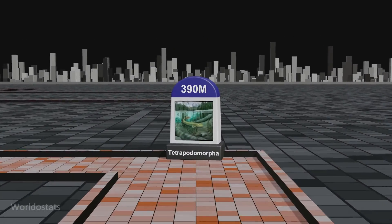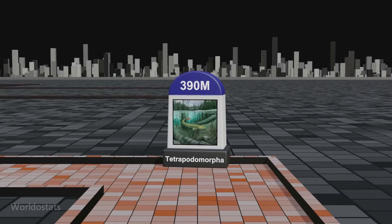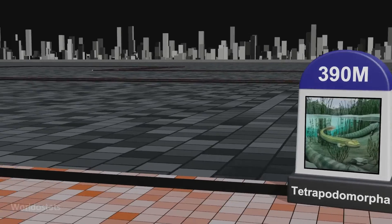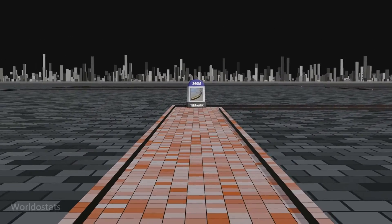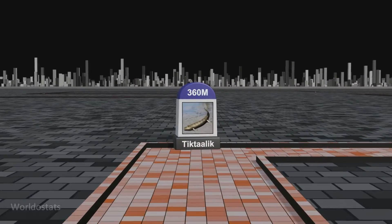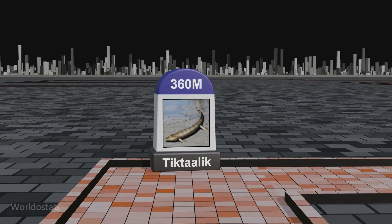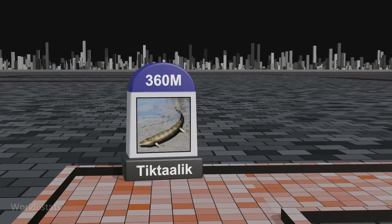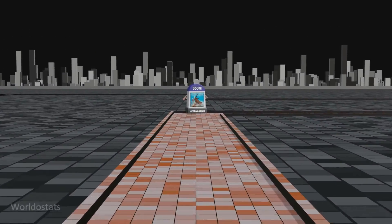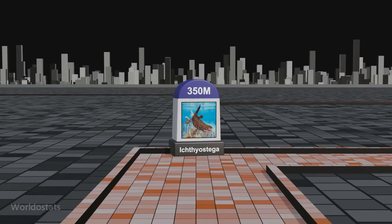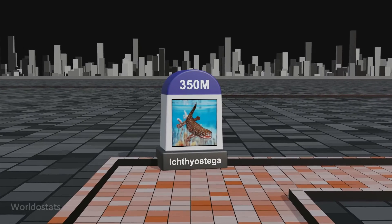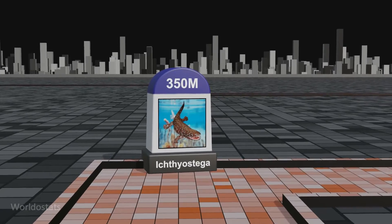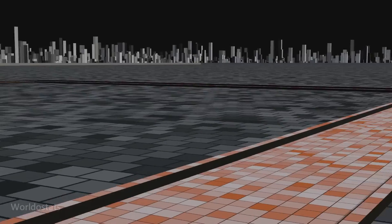Some freshwater lobe-finned fish developed limbs and gave rise to the Tetrapodomorpha. These fish evolved in shallow and swampy freshwater habitats, where they evolved large eyes and spiracles. Tiktaalik, an ancient fish-like tetrapod with limb-like fins, emerged around 360 million years ago, representing a key transitional form between aquatic and terrestrial vertebrates. Ichthyostega, a primitive amphibian and one of the earliest tetrapods, evolved around 360 million years ago, providing insights into the transition from aquatic to terrestrial life during the Late Devonian period.